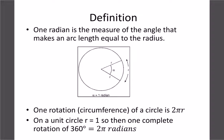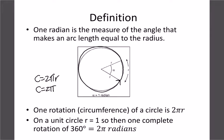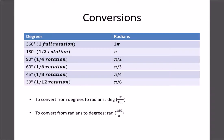One radian equals the distance of one radius of a circle. The circumference of a circle is 2πr, but on a unit circle the radius equals 1, so the circumference is 2π. That means one complete revolution equals 2π radians, and half a circle equals π radians.